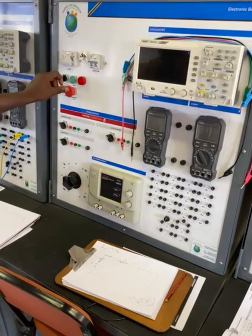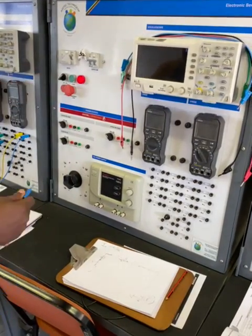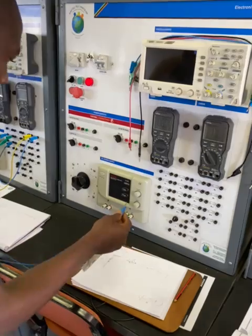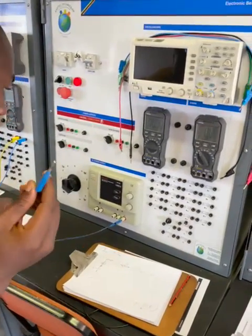The supply link as usual, so we start connecting. We take our positive probe, our positive probe goes to the positive of the ammeter.